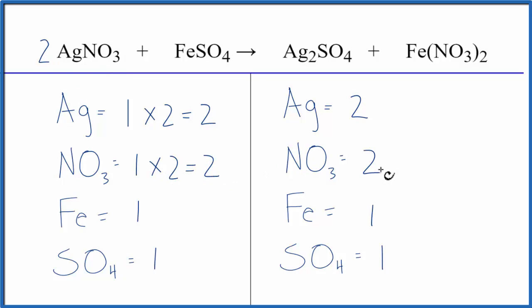And actually, that works out, and this equation is balanced. So by counting these polyatomic ions as just one item if they appear on both sides, like the sulfate or the nitrate, that makes the balancing a lot easier.